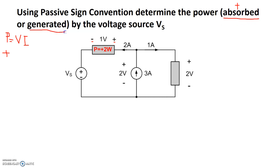If power is generated, then the power has a negative sign. So here we have plus 2 watts, which means this element is absorbing power. Let's take a look at this element: 1 amp is going into the positive terminal, so it is following passive sign convention. Power is voltage 2 volts times 1 amp, so we get a total of 2 watts — plus 2 watts — and again, power is absorbed by this element.